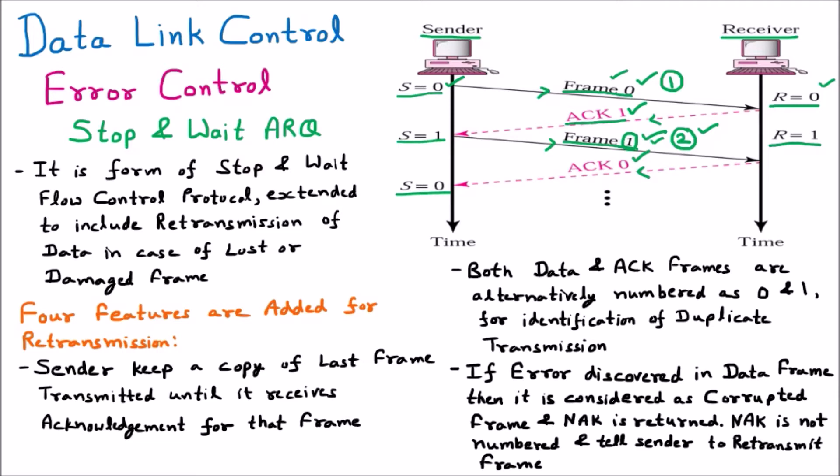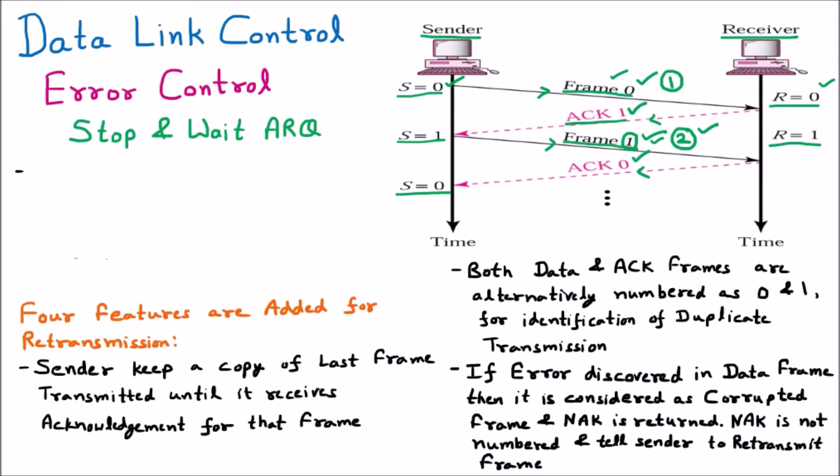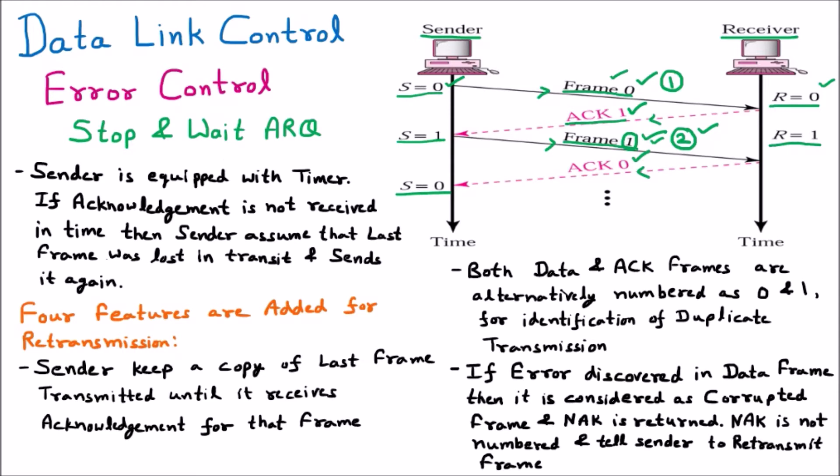The fourth feature is that the sender is equipped with a timer. If the acknowledgement is not received in time, the sender assumes the last data frame was lost in transit and resends that particular frame. If the timer at the sender side expires, the sender assumes the packet was not received by the receiver and regenerates that packet.